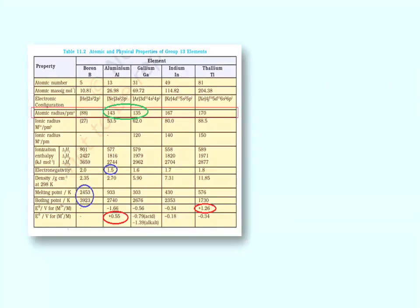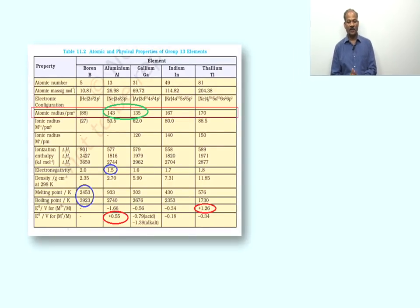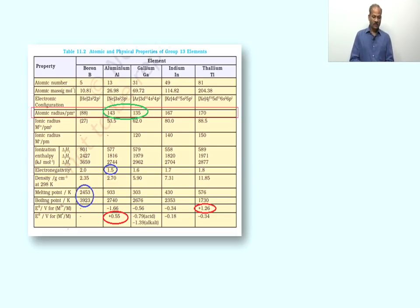In P-block, there are Group 13 elements and Group 14 elements included in Class 11. First of all, we have in general Group 13 elements periodic properties — atomic and physical properties.